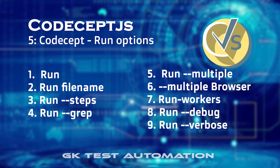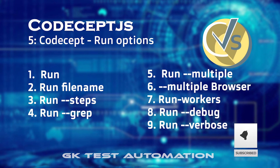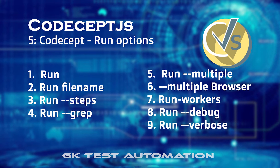In this video we are going to see about CodeceptJS — how many varieties we can run, how many options are available to run the test suite. We are going to cover the following topics: run, run with file name, run with steps, run with the grep command, parallel test, parallel test with multi-browser, parallel test with run workers, debug, and verbose.